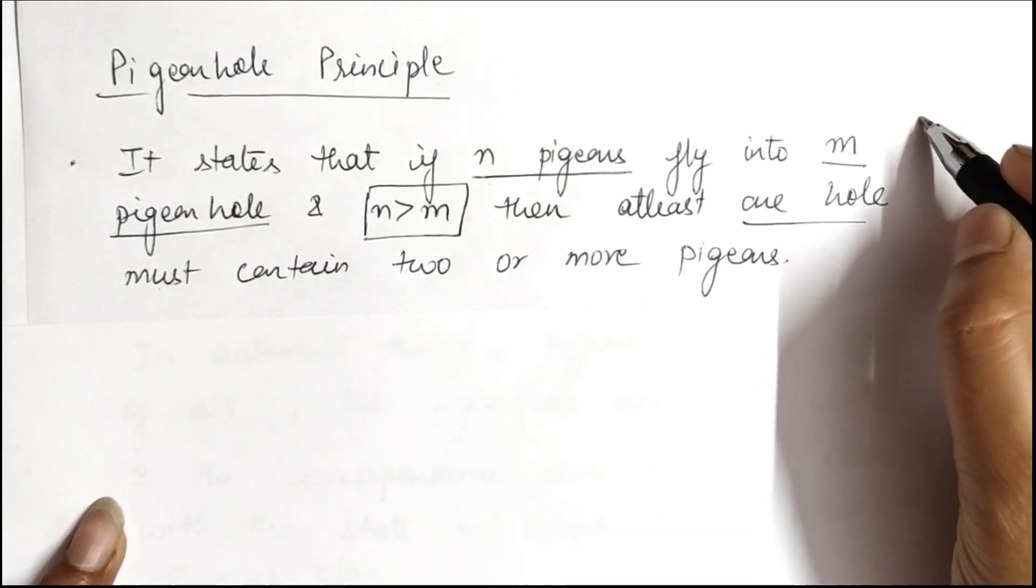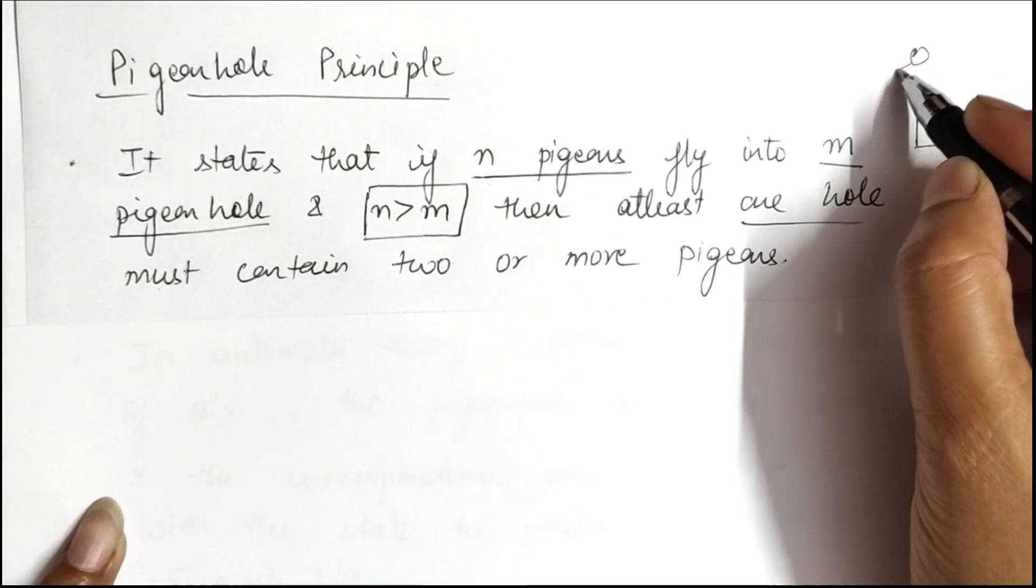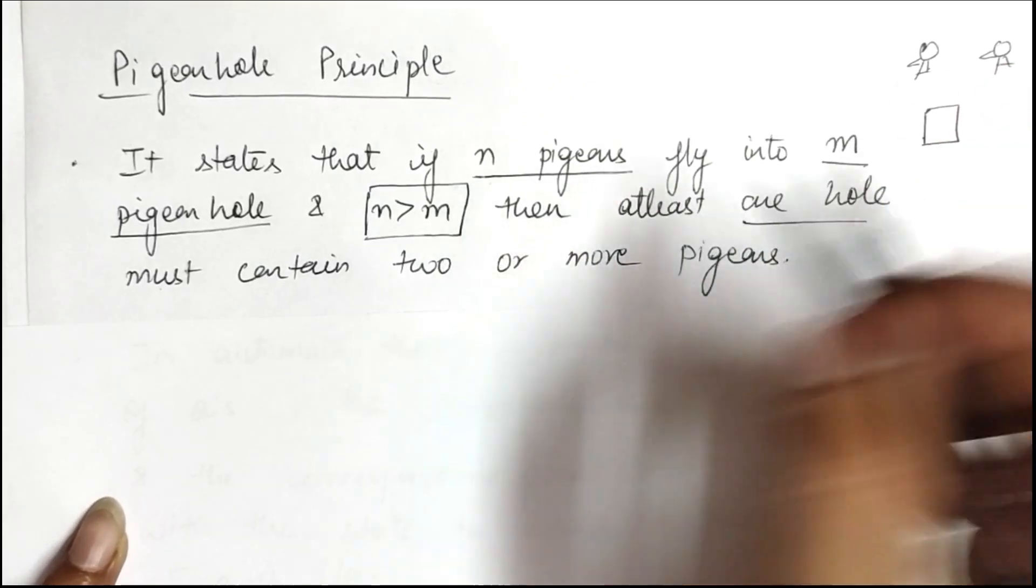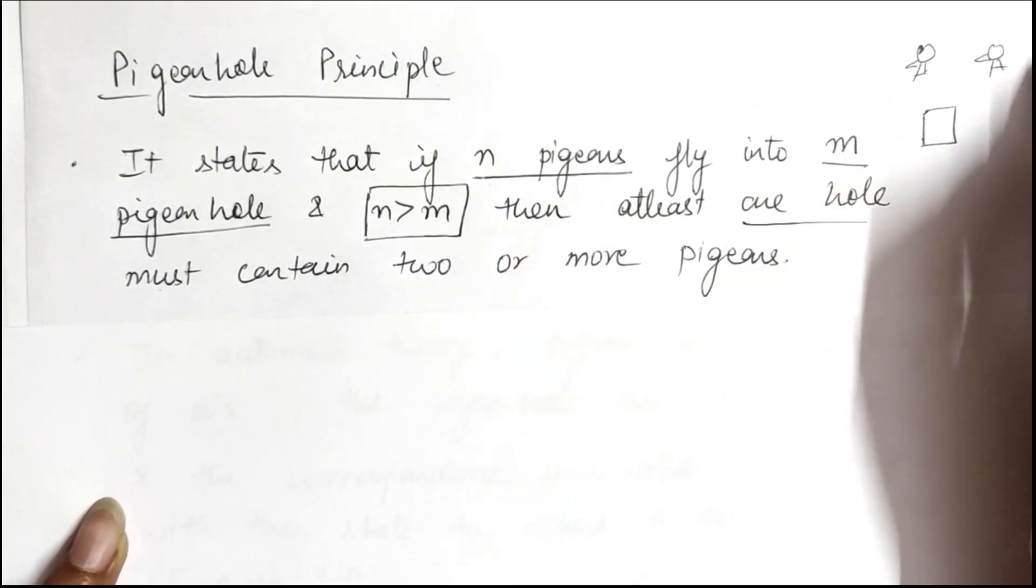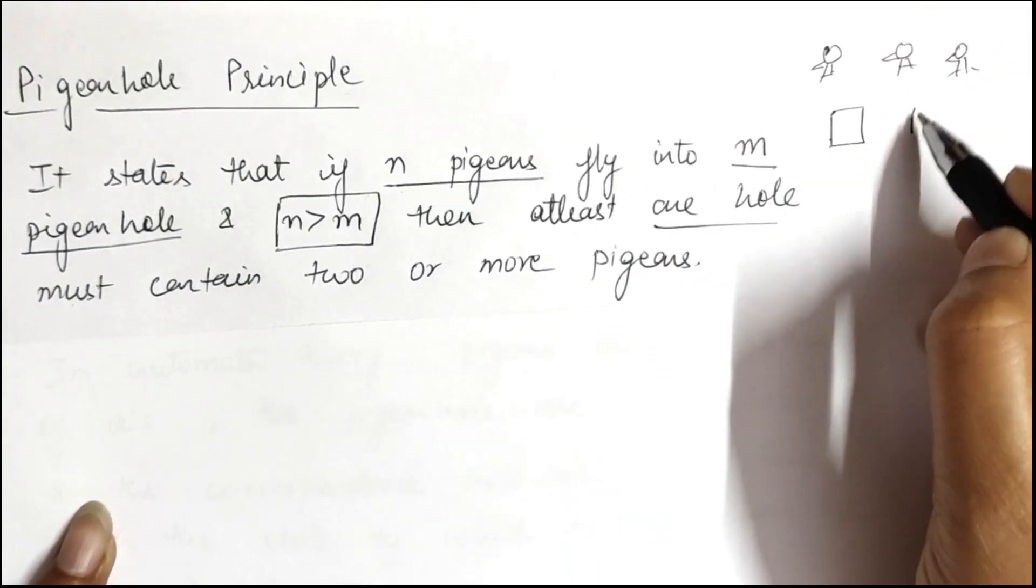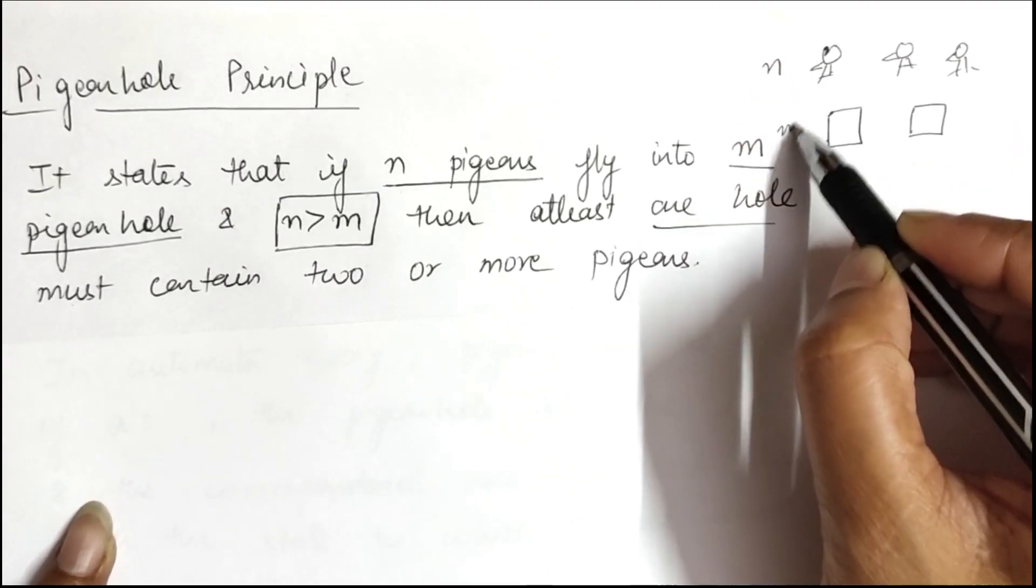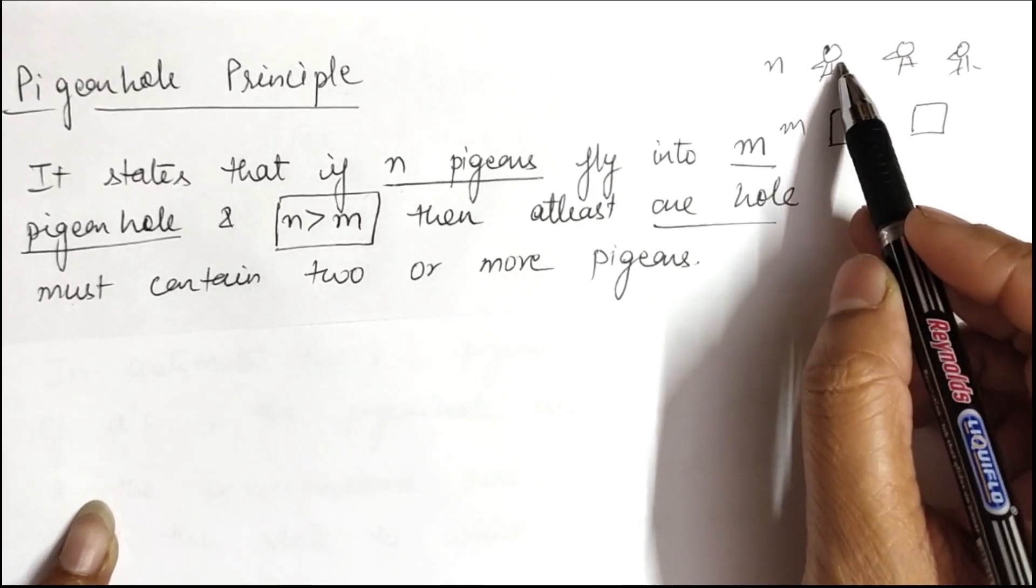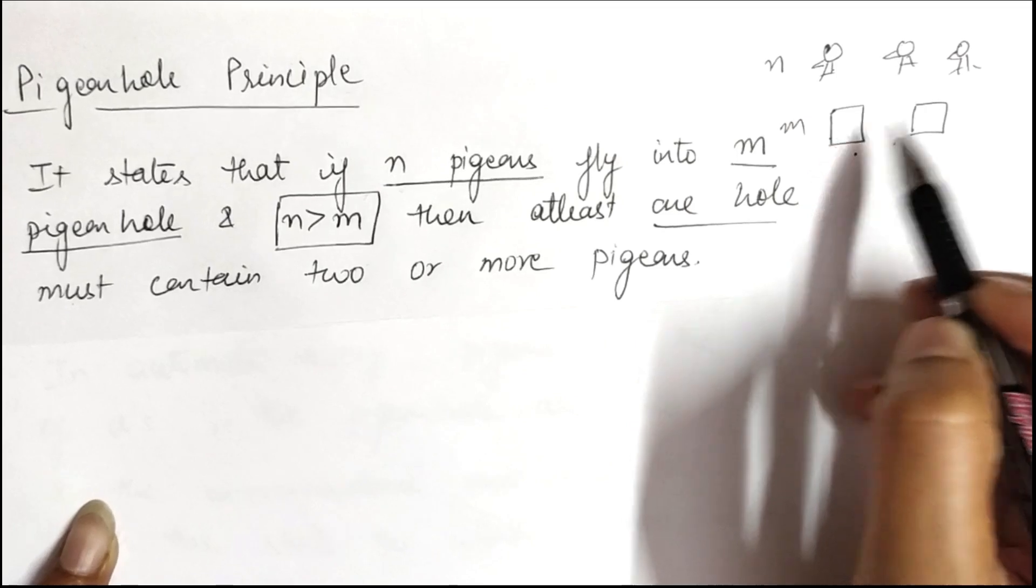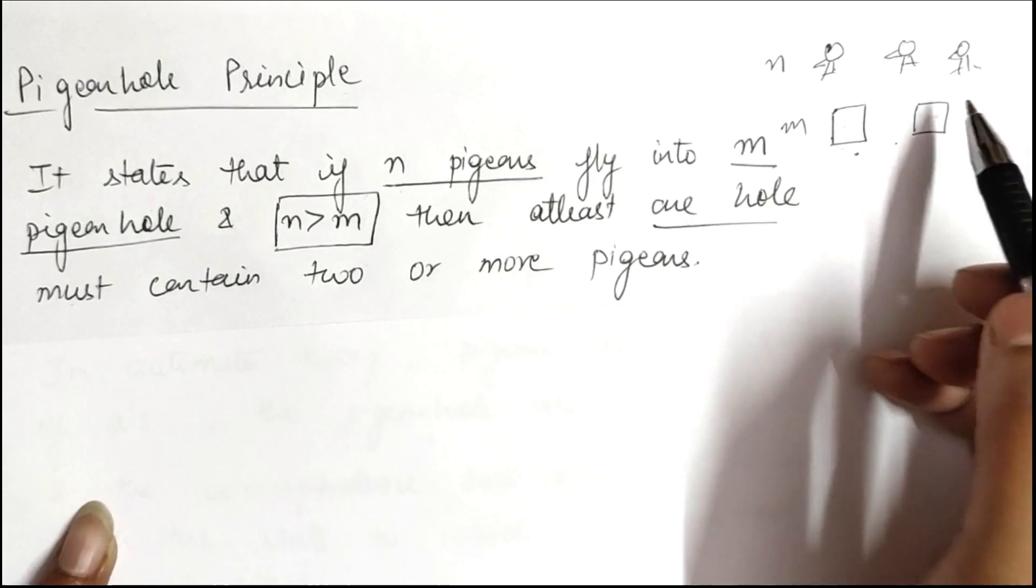This means that if we have three pigeons and two pigeonholes, where n is greater than m, then if we have to place these pigeons on these pigeonholes, at least one of these two pigeonholes must contain two or more pigeons.